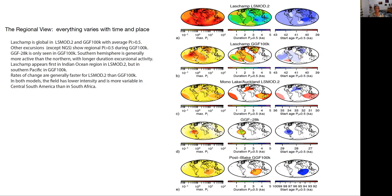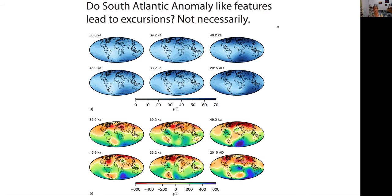If we look at the regional view, we see here the maximum Paleo secular variation index on the left, the duration in the middle, and the start age on the right. We see that this varies with which model you look at, and it's also true that it varies with which excursion you look at. We can ask whether South Atlantic anomaly-like features that we see in the modern field lead to excursions — this is not necessarily the case; here are a bunch of examples that don't.